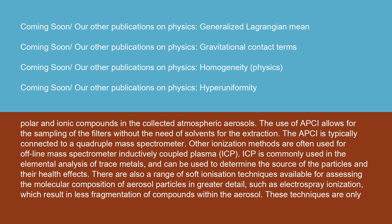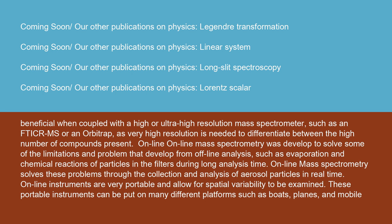Other ionization methods are often used for offline mass spectrometers, such as inductively coupled plasma (ICP), which is commonly used in the elemental analysis of trace metals and can be used to determine the source of the particles and their health effects. There are also a range of soft ionization techniques available for assessing the molecular composition of aerosol particles in greater detail, such as electrospray ionization, which results in less fragmentation of compounds within the aerosol. These techniques are only beneficial when coupled with a high or ultra-high resolution mass spectrometer, such as an FT-ICR-MS or an Orbitrap, as very high resolution is needed to differentiate between the high number of compounds present.